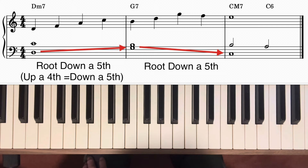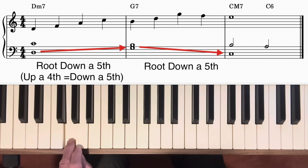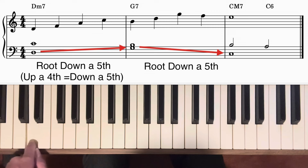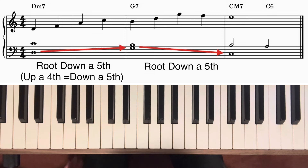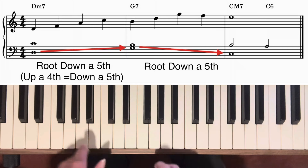If the root of a chord goes up a fourth — for instance D up to G — we call that down a fifth, because D going down to G is down five. Up a fourth and down a fifth are one and the same thing. Let's look now at how we can combine some of these patterns on a 2-5-1 chord progression in the key of C major.